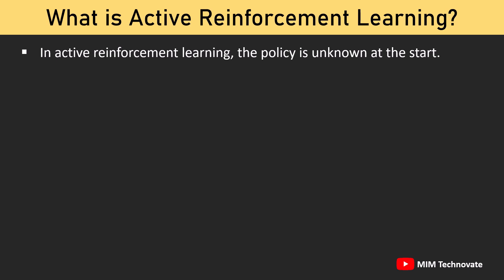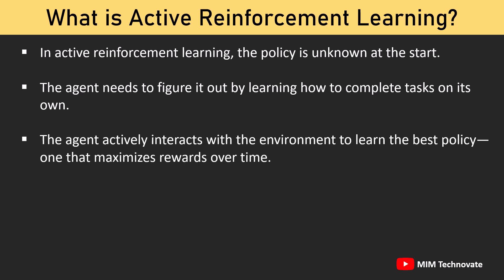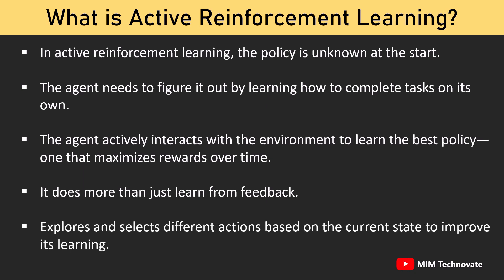In Active Reinforcement Learning, the policy is unknown at the start. The agent needs to figure it out by learning how to complete tasks on its own. The agent actively interacts with the environment to learn the best policy — one that maximizes rewards over time. It does more than just learn from feedback; it also explores and selects different actions based on the current state to improve its learning.